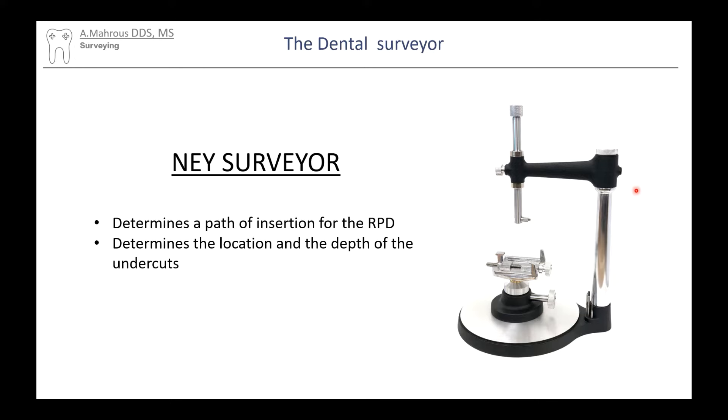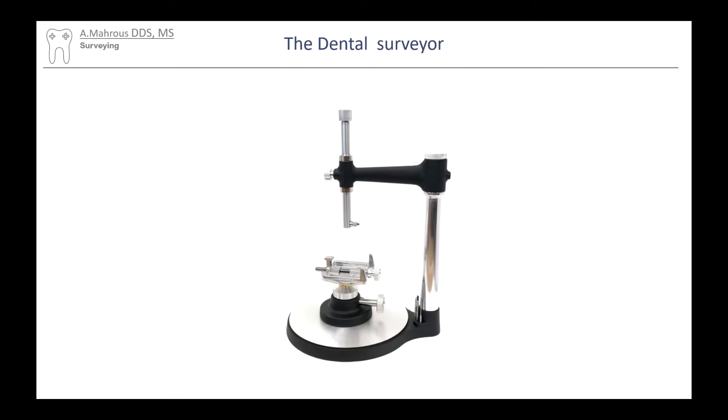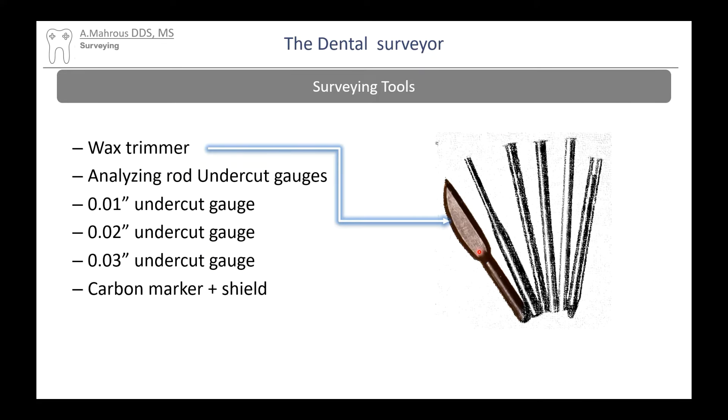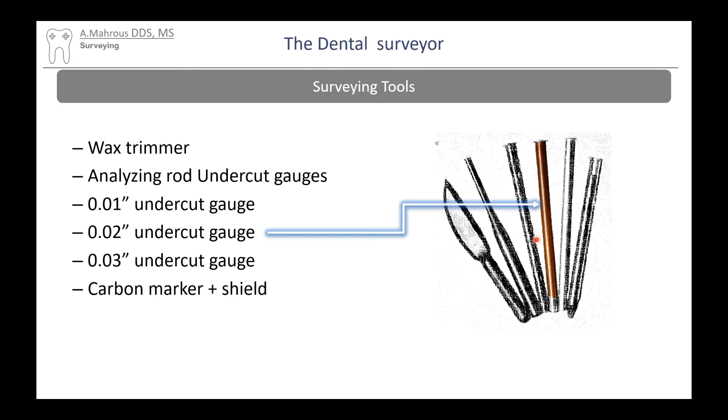This here is called a NAE surveyor and you can use that instrument to help you determine the path of insertion of an RPD and determine the location and depth of the undercuts. It comes with a bunch of tools. They're usually hidden in that screw right up here. You've got a wax trimmer, an analyzing rod, and three undercut gauges.